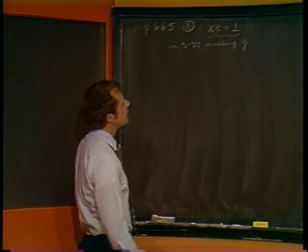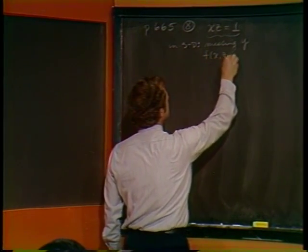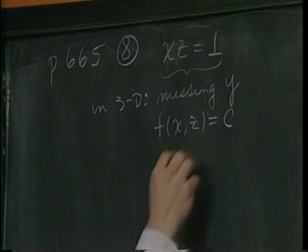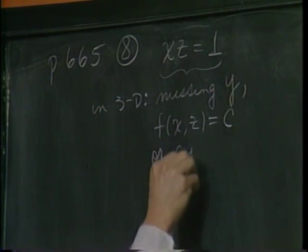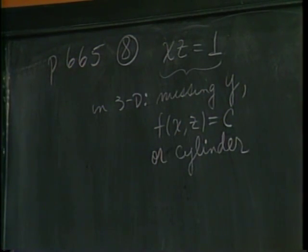You're missing the y variable, and this falls into the classification of a function of x and z equaling a constant, and that turns out to be what we call the cylinder - not your old right circular cylinder but a cylindrical surface.